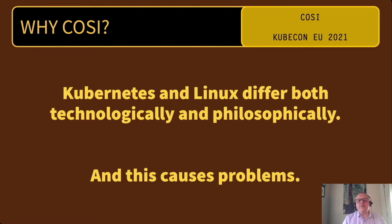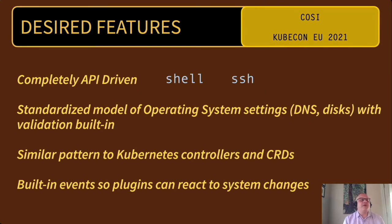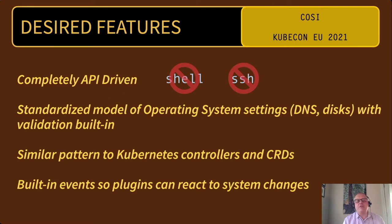Now that we've talked about the motivation for this project, let's talk about some desired features. Our highest priority is having an operating system that is completely API-driven. In practice, we want an OS that doesn't need a shell installed — we would not like people SSH-ing into the box to configure things. Everything on the operating system should be configurable via API. Another goal is having configuration settings with a standardized model. Currently in the Unix world, we have lots of different file formats for every application, which causes integration issues. We aim to have a standardized model for any settings, whether it's disk, DNS, or anything like that.